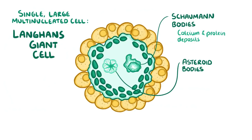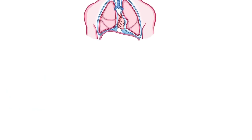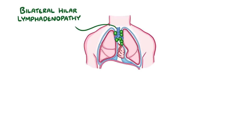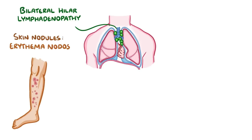What asteroid bodies are made of is controversial. Some scientists think that they're pieces of the cytoskeleton, while others think that they're made up of lipids. Over time, the granulomas cause lymph nodes to enlarge, and that can cause bilateral hilar lymphadenopathy. Sarcoidosis is a systemic disease, meaning that the granulomas can sometimes form in other organs besides the lymph nodes.